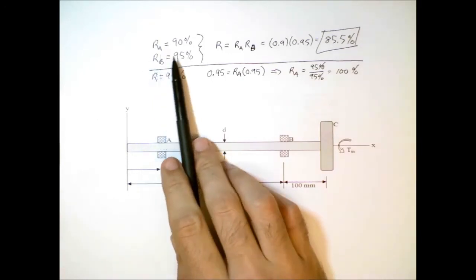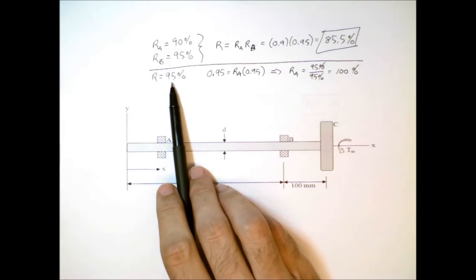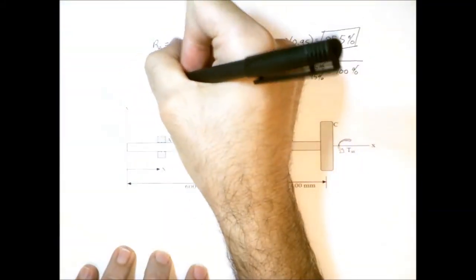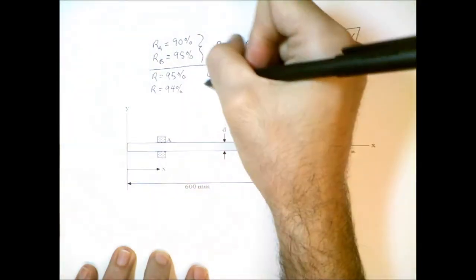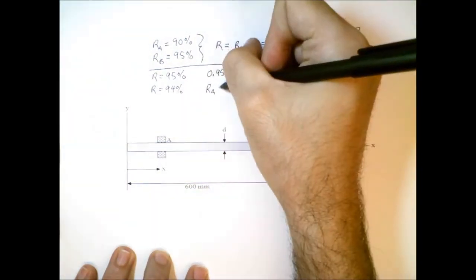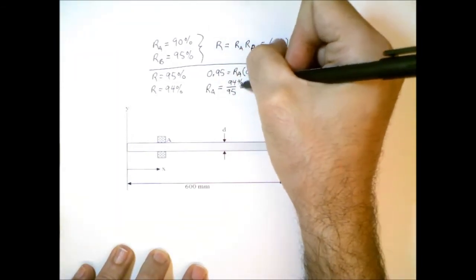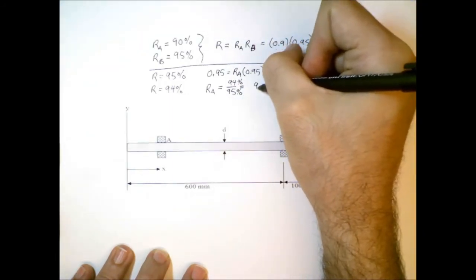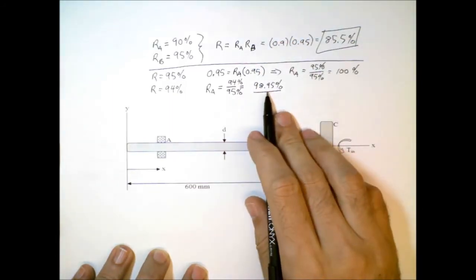They would both need to have a reliability of greater than 95% for a total reliability of 95%. So let's look at what we can do. Let's say if we are happy with something close to 95% now. So let's say we're happy with 94%. What does the reliability of A need to be in order to achieve that? So 94% divided by 95%, that is 98.95%. So while that may be a more expensive, stronger bearing, it's possible to achieve a total reliability of at least 94%.